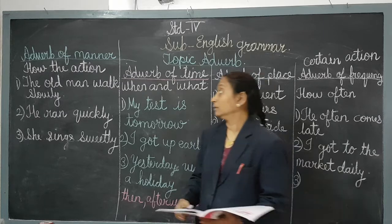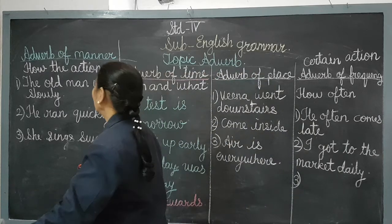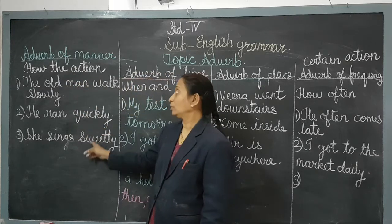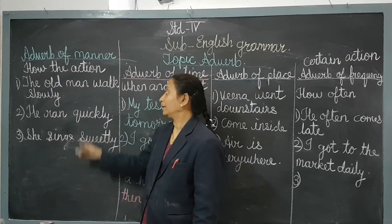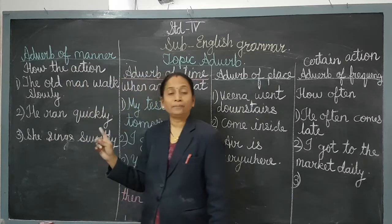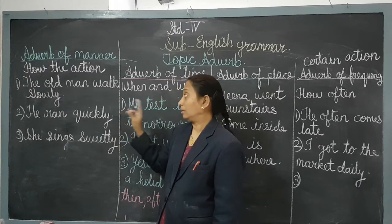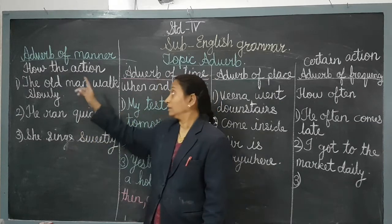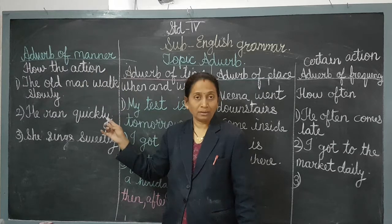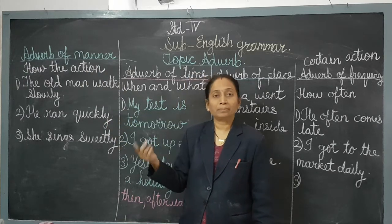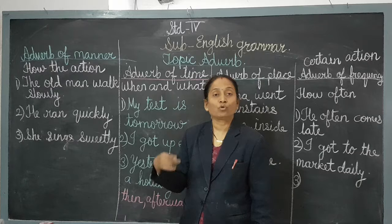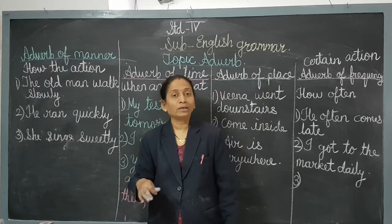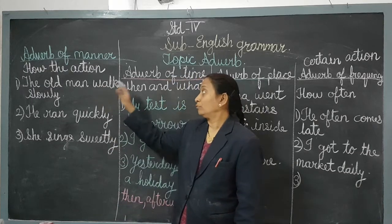The first kind is the adverb of manner. What is the meaning of adverb of manner? It tells us how the action is done — what the people, person, or animal is doing, and in what manner they are doing it. That is called the adverb of manner.